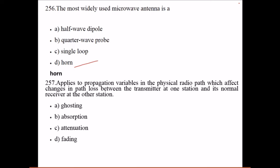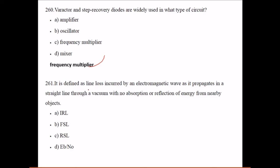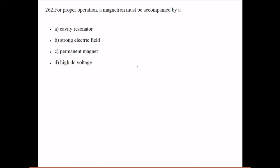Applies to propagation variables in a physical radio path which affect change in path loss between transmitter at one station and its normal receiver at the other station - this is fading. Varactor and step recovery diodes are widely used in one type of circuit - frequency multiplier. It is defined as line loss incurred by electromagnetic waves as it propagates in a straight line through vacuum with no absorption or reflectivity of energy from nearby objects - it is FSL. For proper operation, magnetron must be accompanied by permanent magnet.